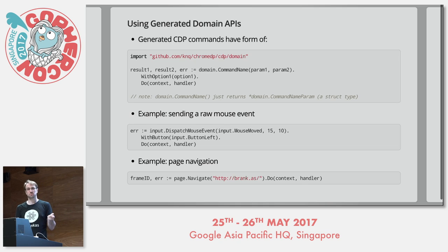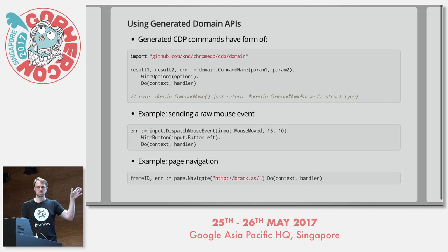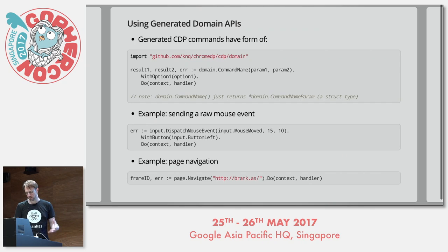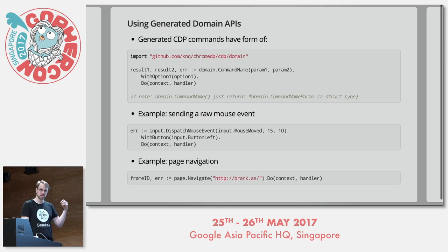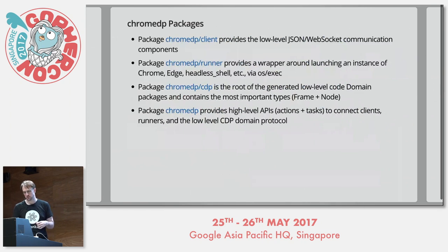For APIs that have results, instead of returning them as a single struct, I made the decision to break them out into separate return variables, which I think makes more sense. For those APIs that only return an error, they all match my action interface.